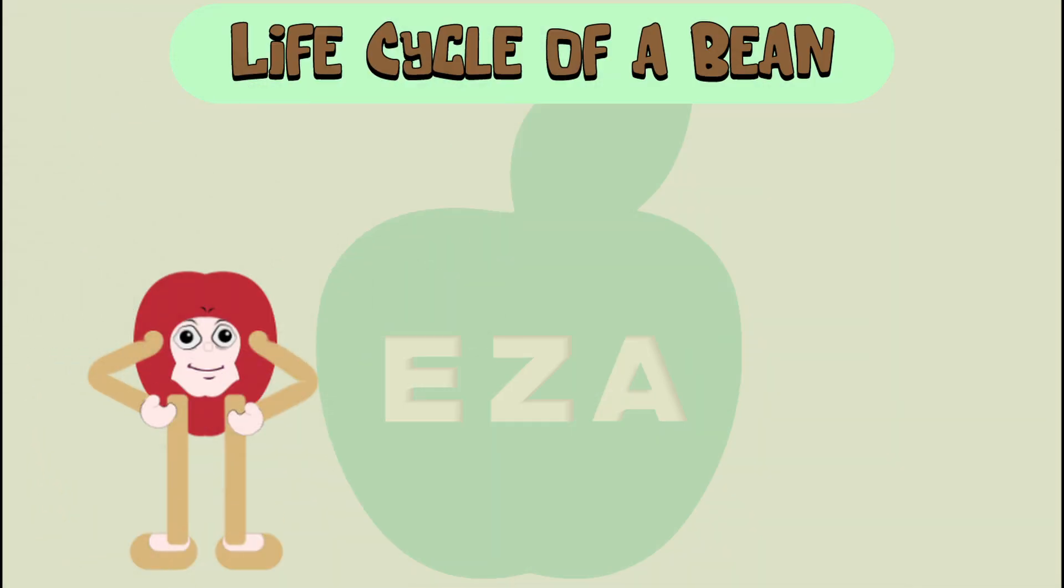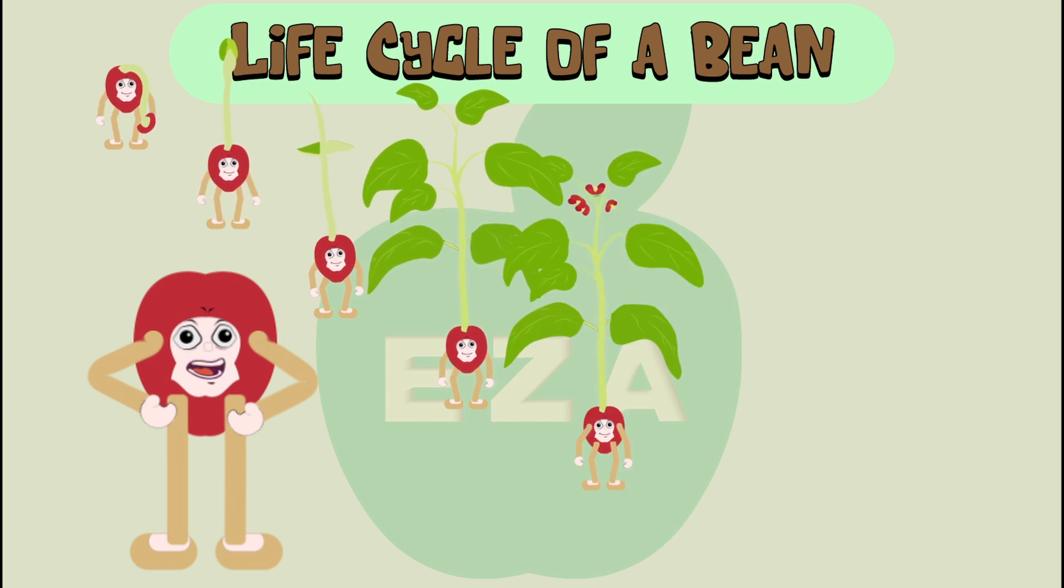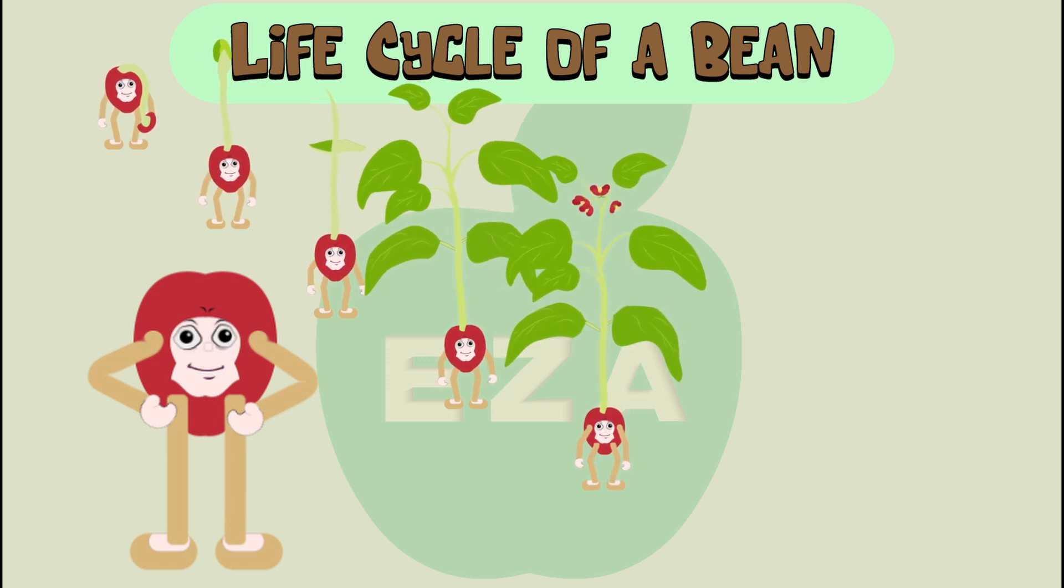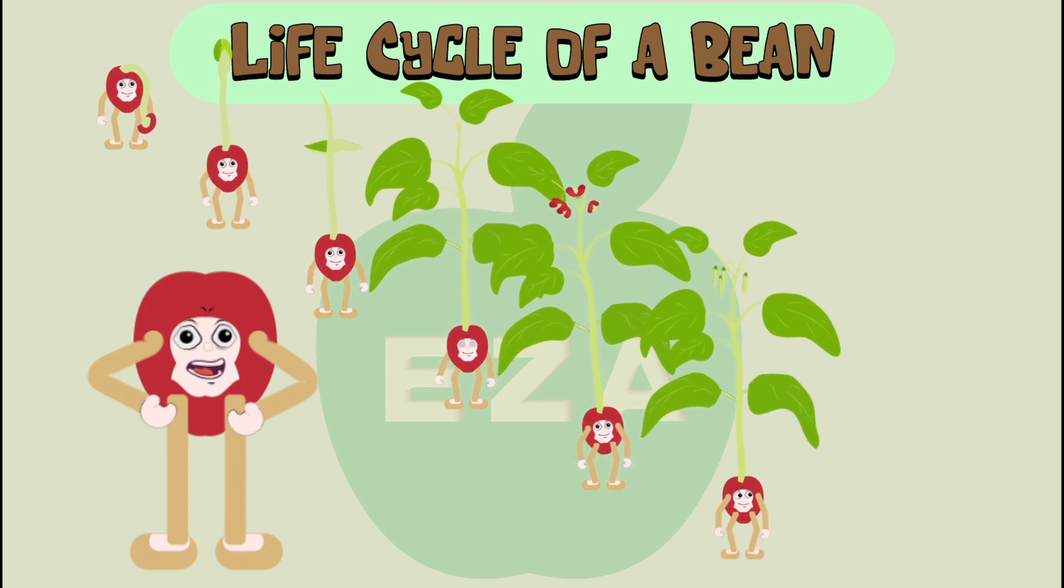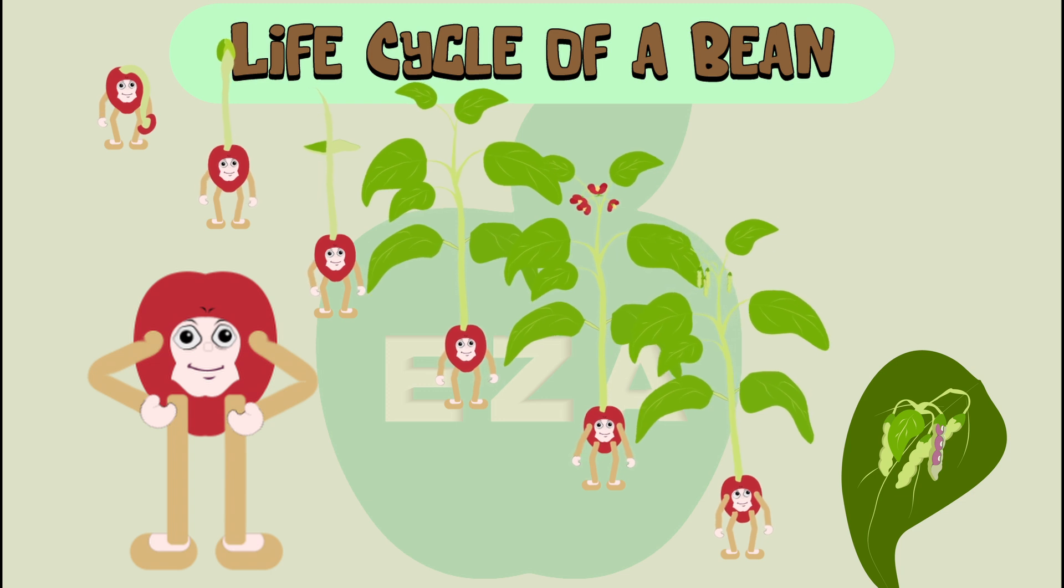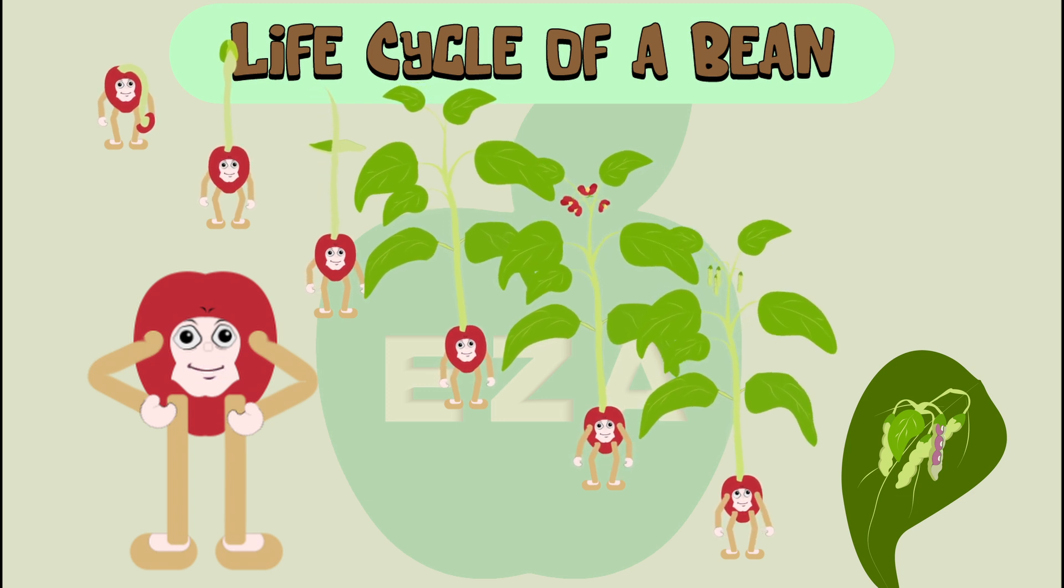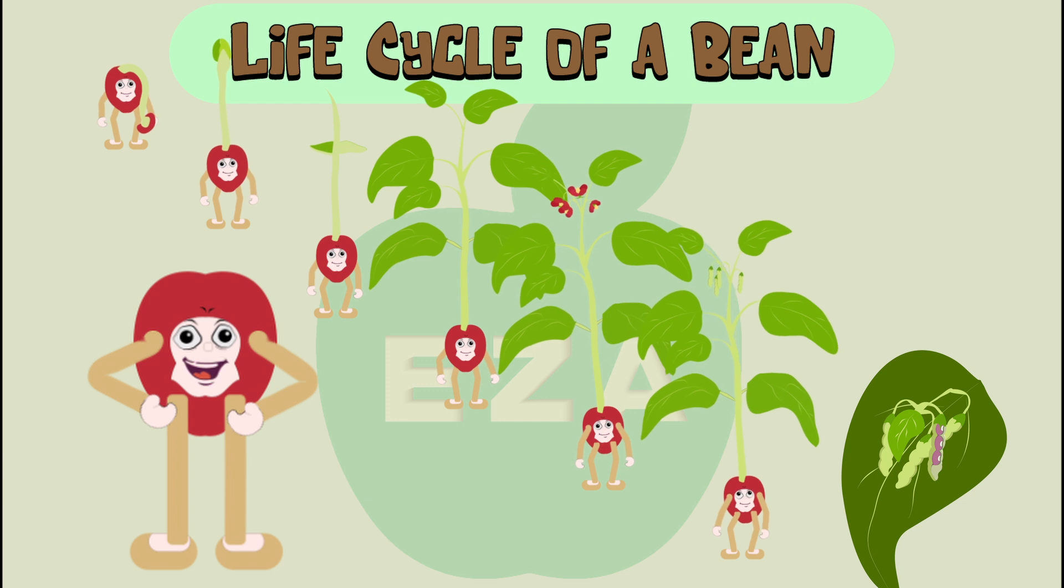So, let's review. There are 7 stages in the life cycle of a bean plant. Each stage is an important part of the process and life cycle of a bean.